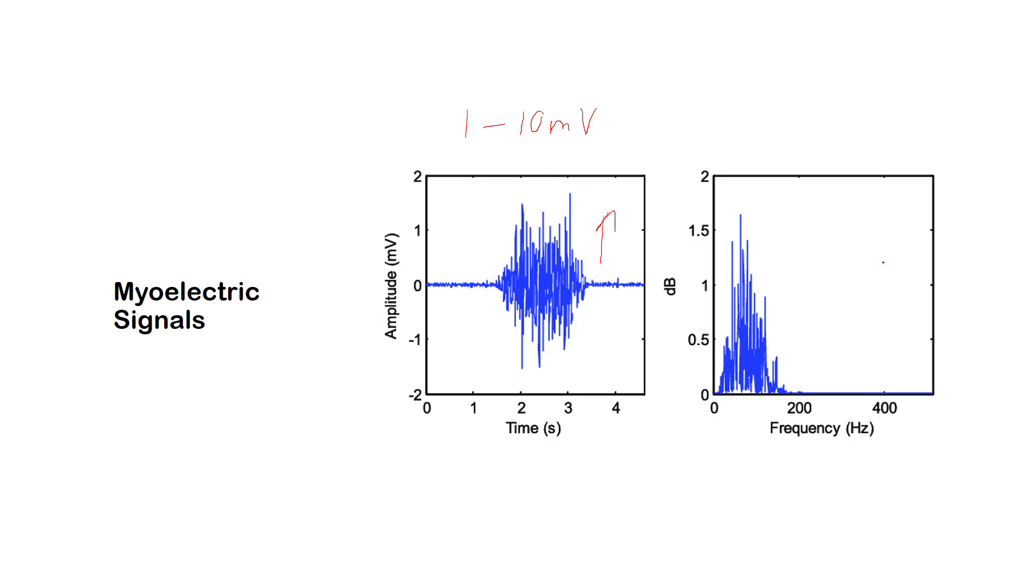The signal lies in the frequency between 0 to 500 Hz, but dominant frequencies are between 50 Hz to 150 Hz. As I mentioned before, the signal is highly influenced by noise in the frequency range of 50 Hz to 60 Hz.